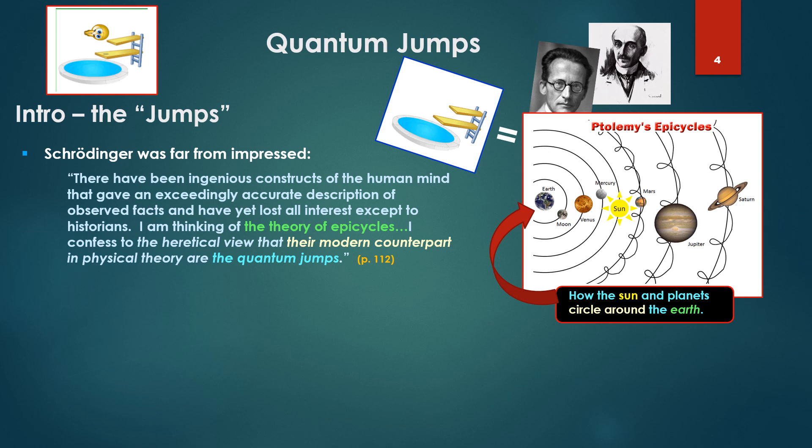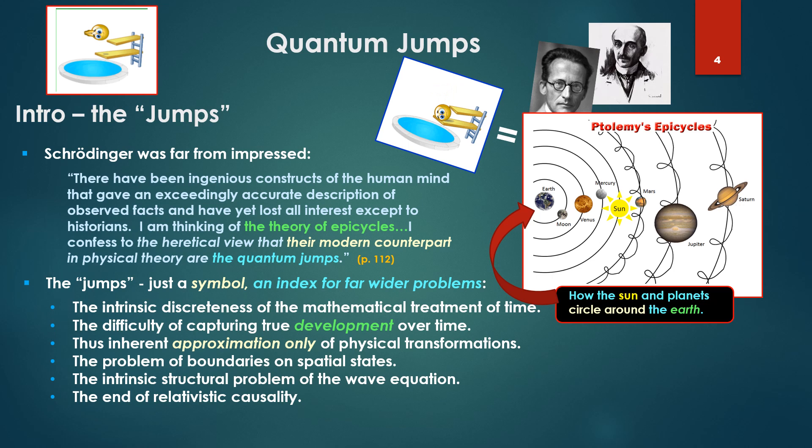The jumps are just a symbol, an index for wider problems: the intrinsic discreteness of the mathematical treatment of time, the inability to represent development in time, true development, thus inherent approximation only to physical transformations. The problem of boundaries on spatial states, having to set boundaries for computational purposes. The intrinsic structural problem of the wave equation, the end of relativistic causality.